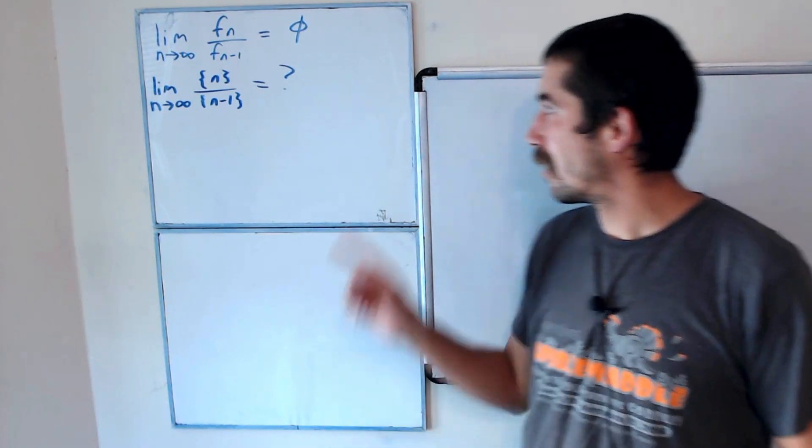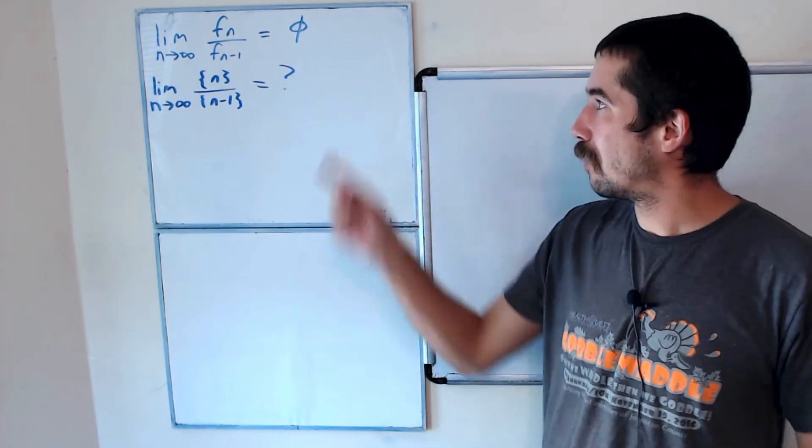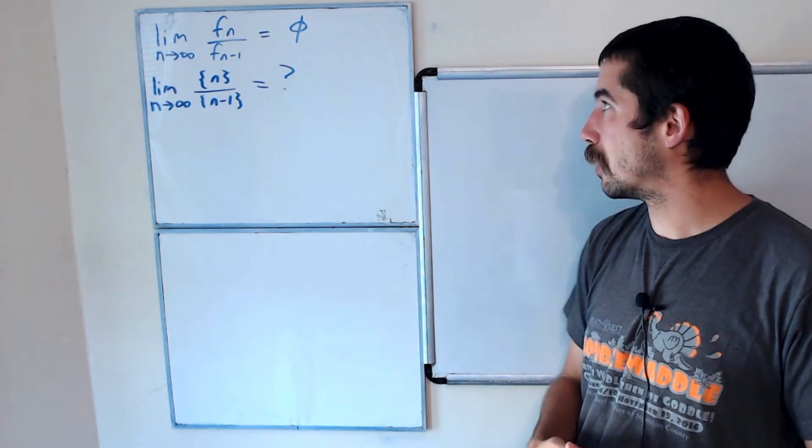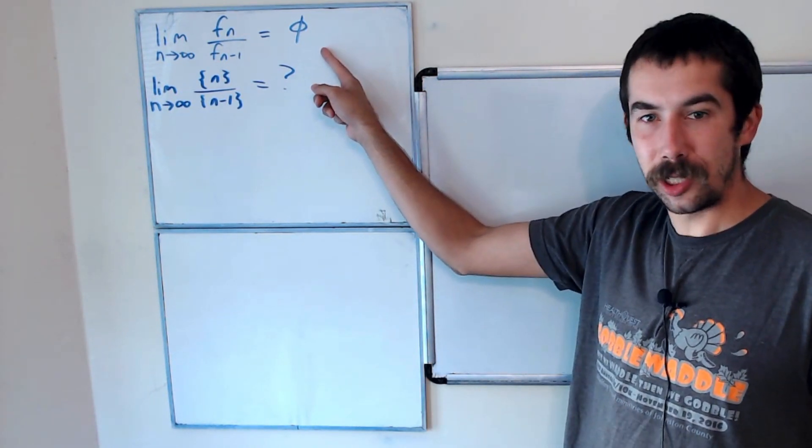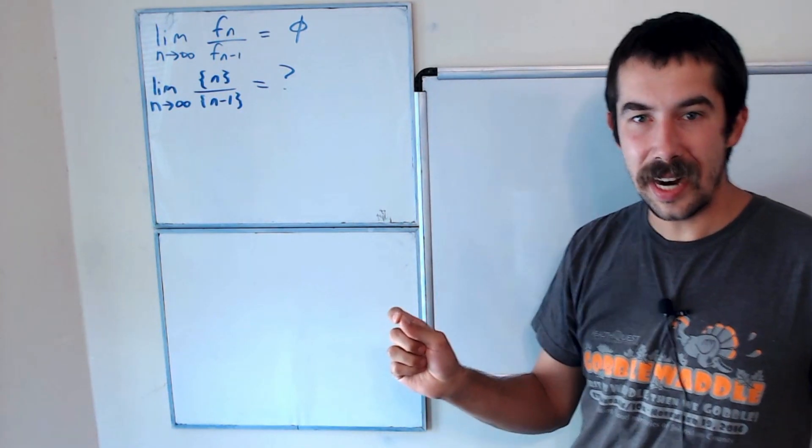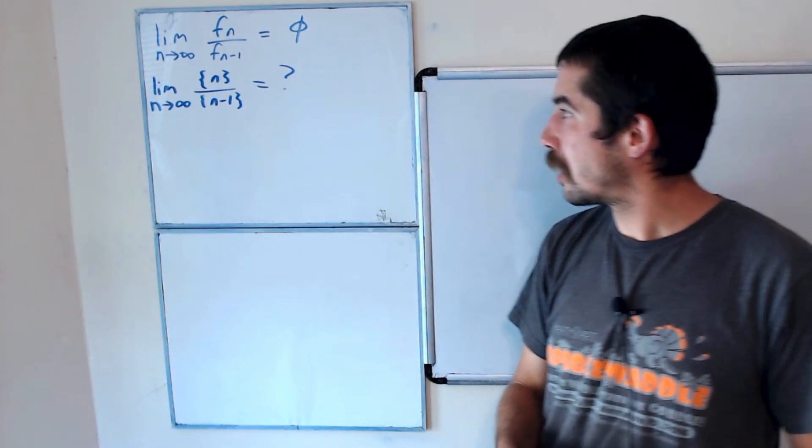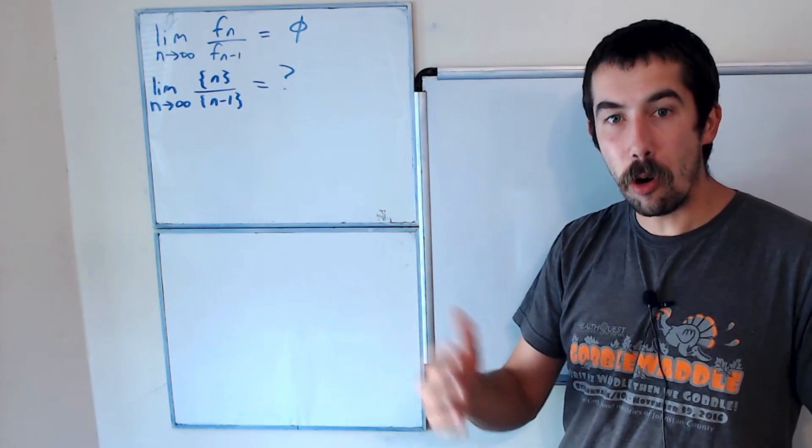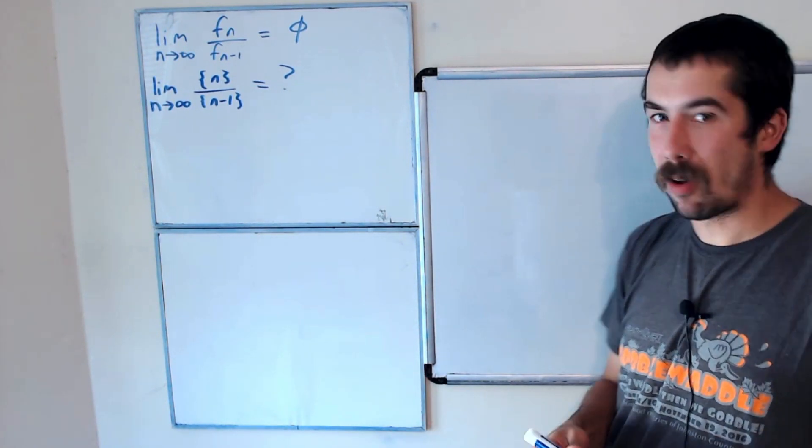As you know, the limit as n goes to infinity of the nth Fibonacci number over the n-1st Fibonacci number is equal to the golden ratio. What we're going to look at today is what is the limit as n goes to infinity of the nth Lucas polynomial over the n-1st Lucas polynomial.